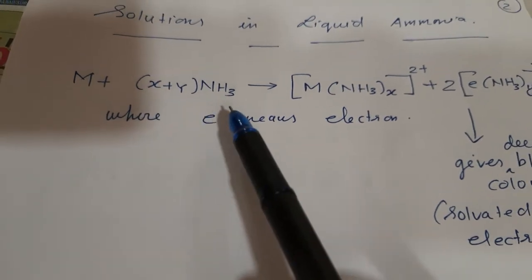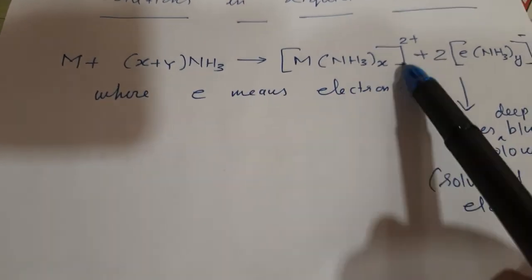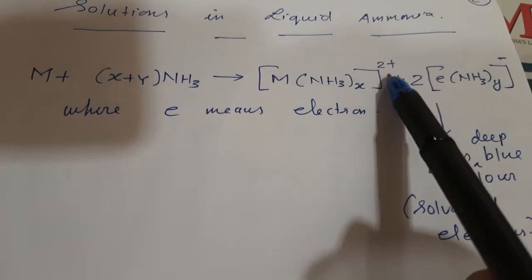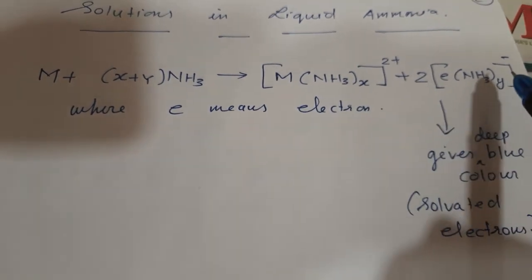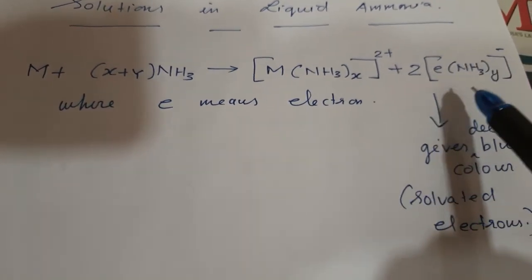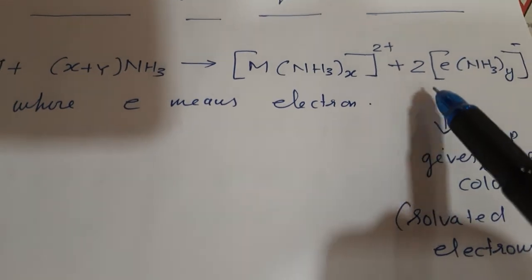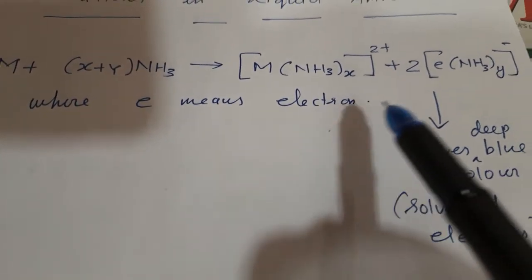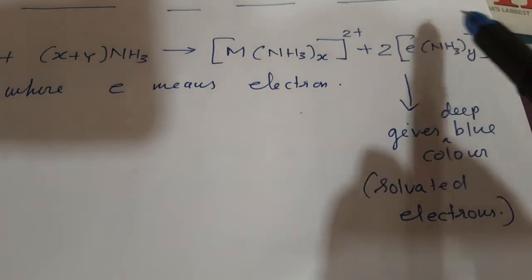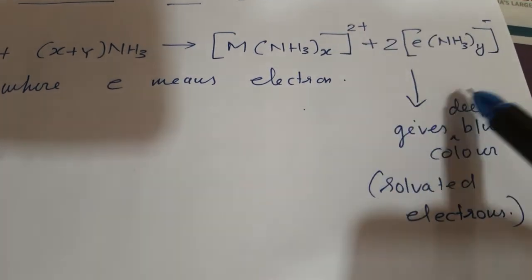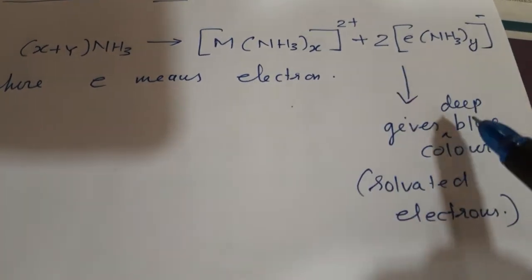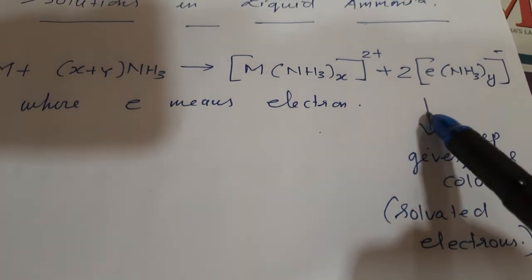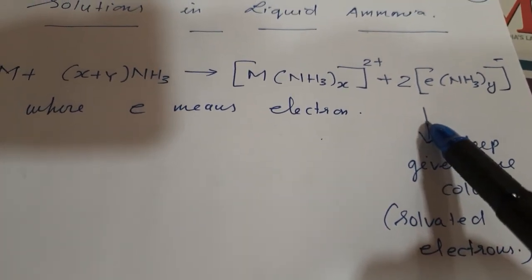M²⁺ + X + Y ammonia will form a complex. The 2+ ion is the cation. The anion is the solvated electron — 'e' means electron. These are solvated electrons, and the deep blue color is due to these solvated, free electrons.